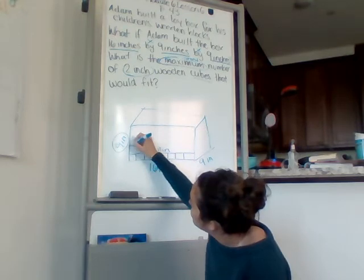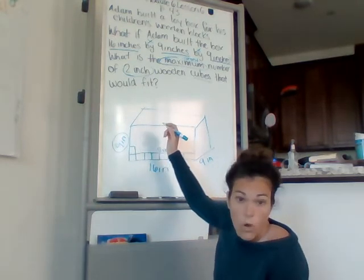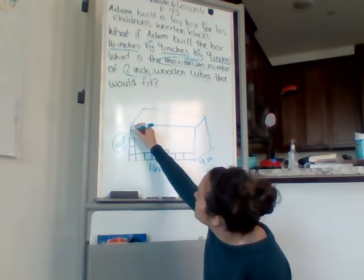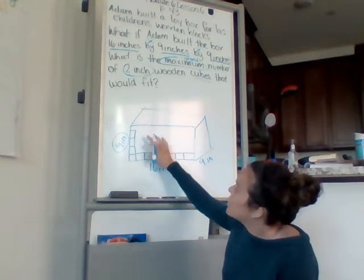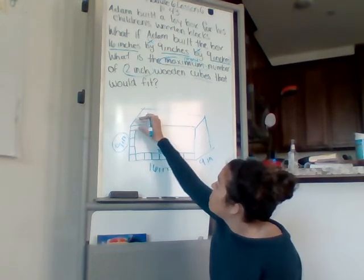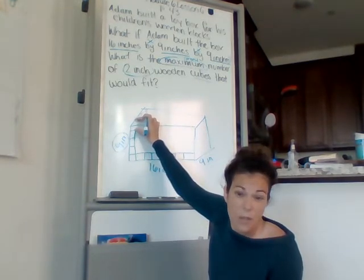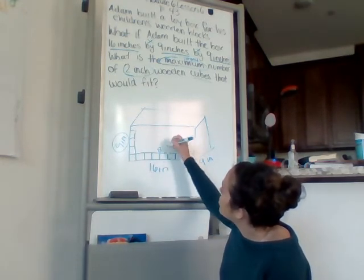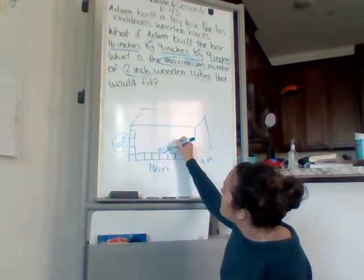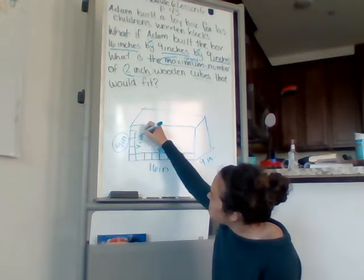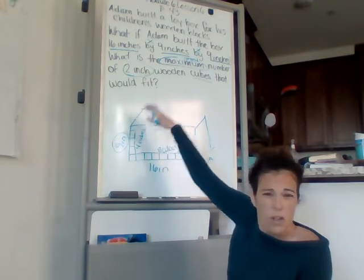So if I did that, I'd go 2, 4, 6, 8. There's going to be a little bit of space up here, but I don't have enough room to put in an extra block or it would stick out the top. So I can only fit 4, I should say 8 cubes. I can only fit, unfortunately, 4 cubes here. That is the maximum number that would fit without going over the top.